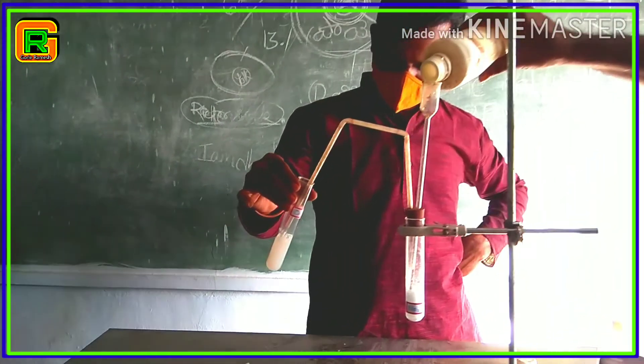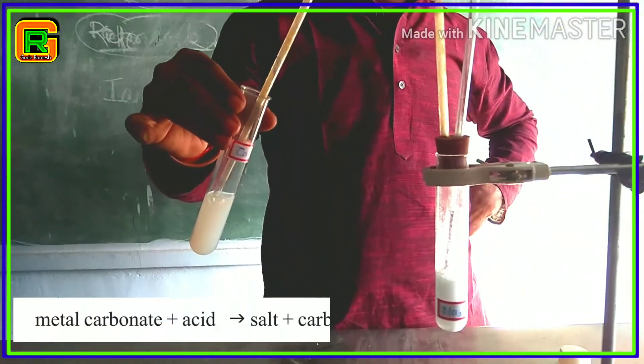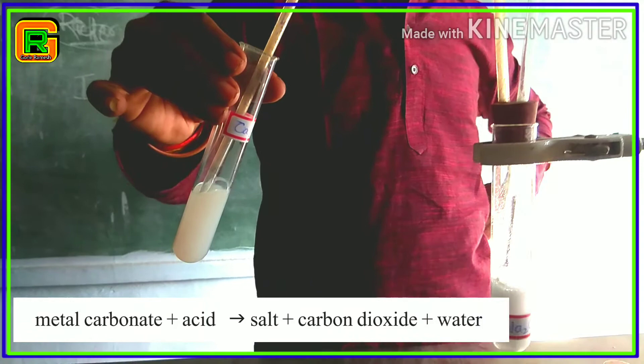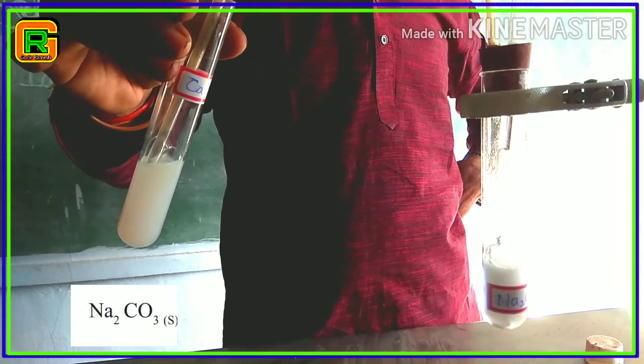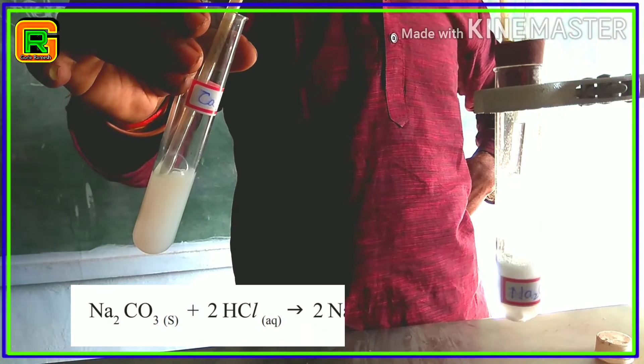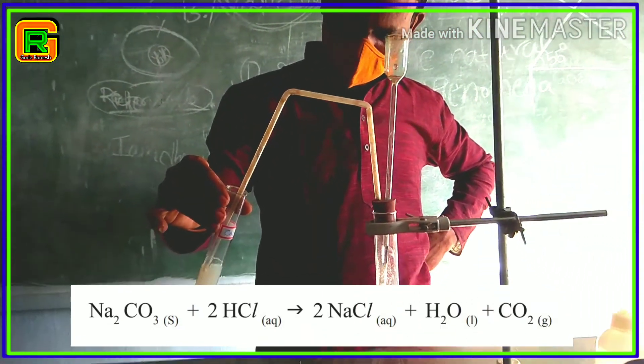We can write the chemical equation for this experiment as metal carbonate plus acid gives rise to salt plus carbon dioxide plus water. That means Na2CO3 plus HCl gives rise to NaCl plus H2O plus CO2.